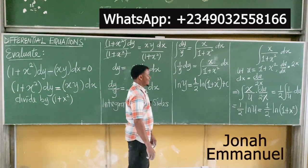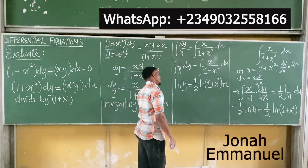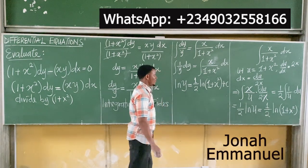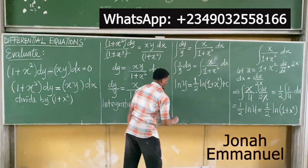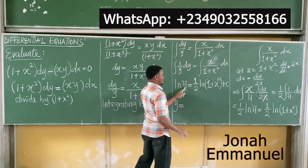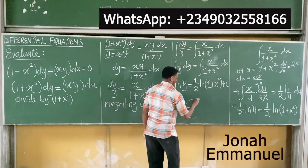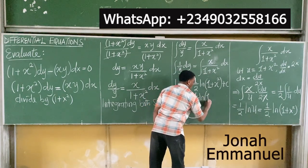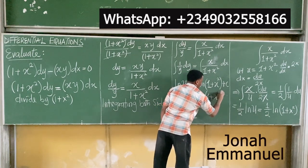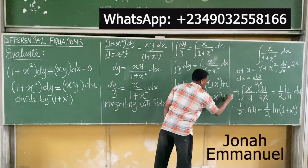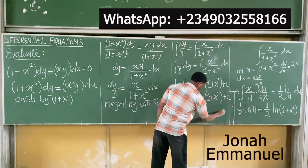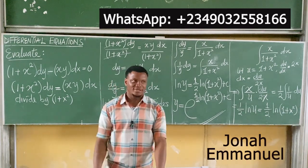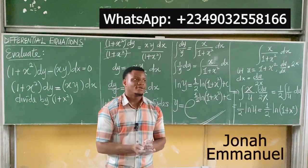So putting it together, ln y = (1/2) ln(1 + x²) + C. If you want to make y the subject, take the exponential of both sides: y = e^[(1/2) ln(1 + x²) + C]. This is the answer to the question.